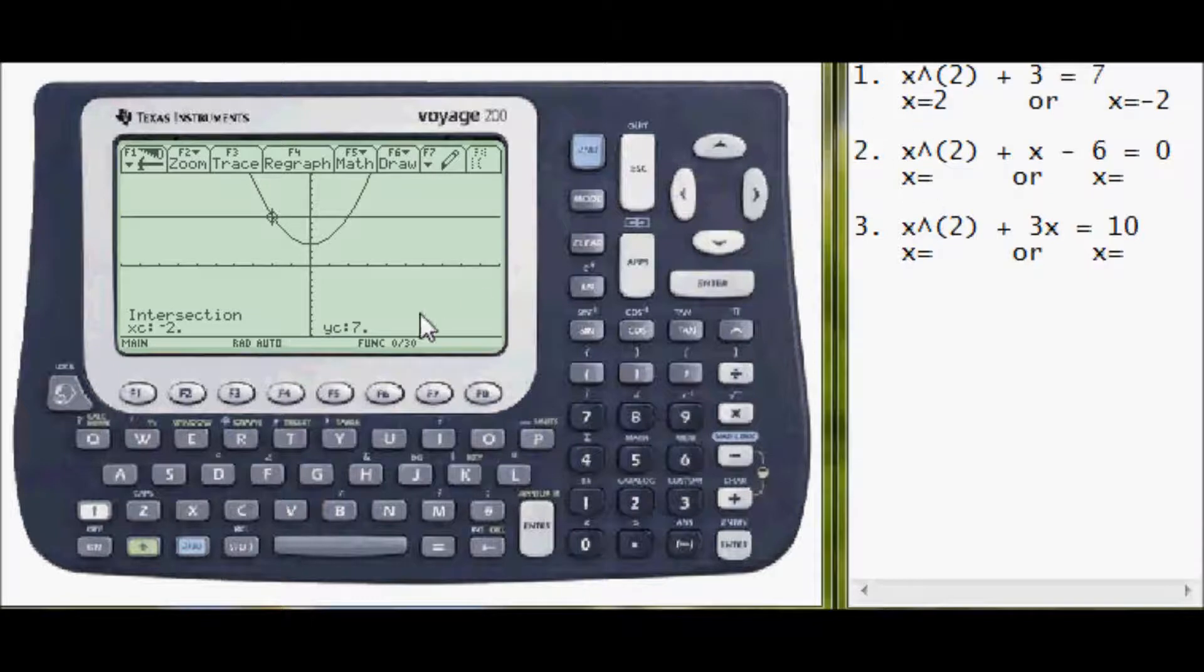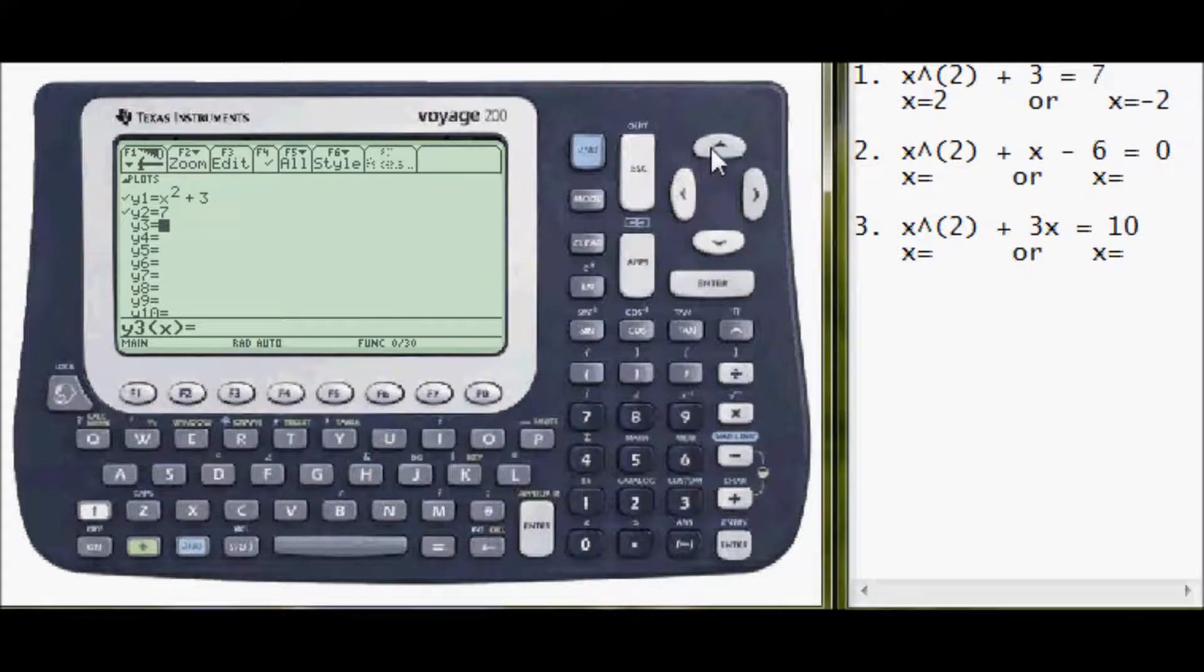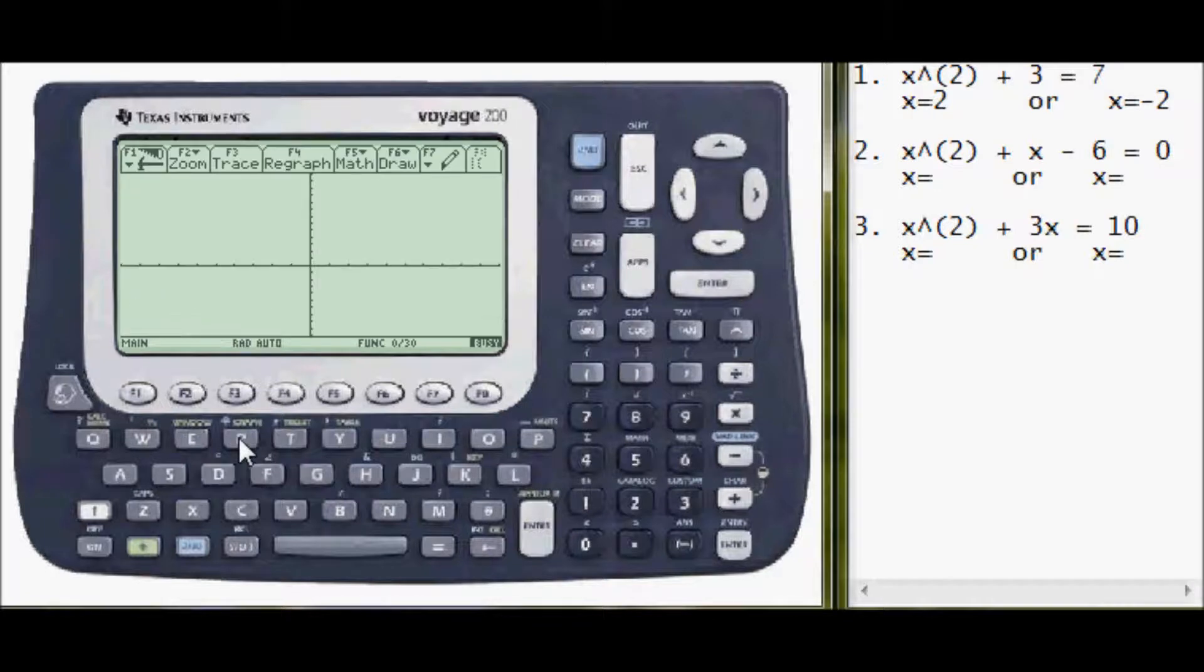Okay, so those are the answers to the first problem. Now let's go back to y equals. And I'll clear these out. The clear button is right here by the apps button. Okay, now that this is done, I'll go on to the second equation. So, x squared, and then plus x, minus 6. This time I won't do y2 equals 0 because that's just the x axis. Okay, now green diamond key in R to graph.